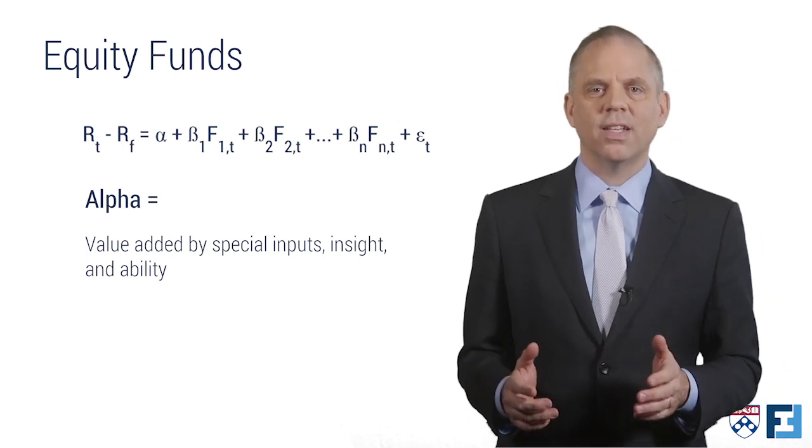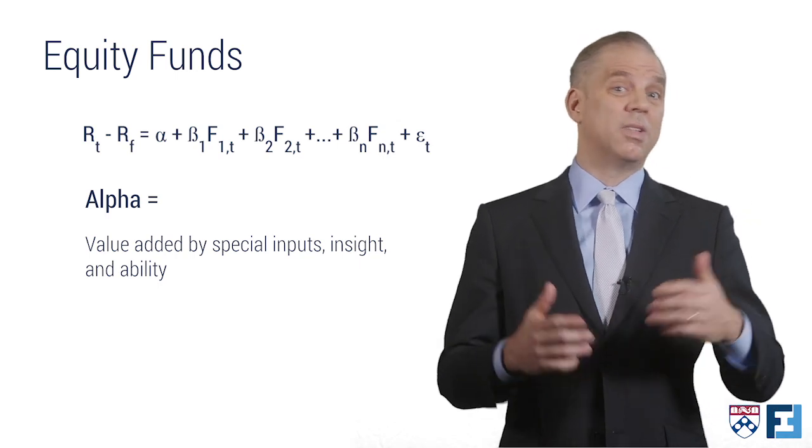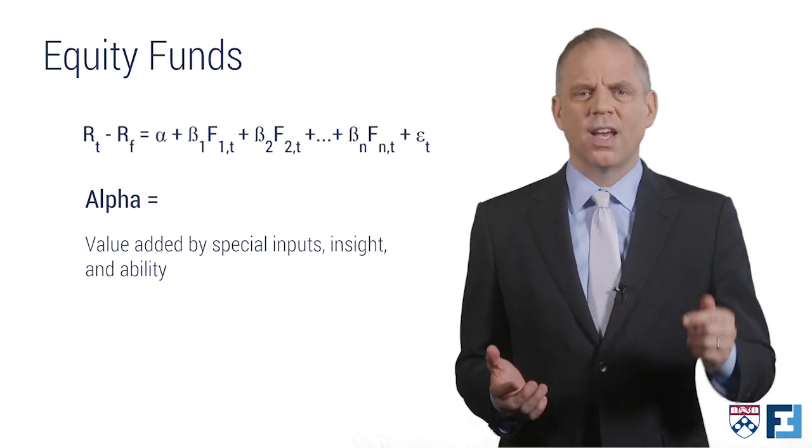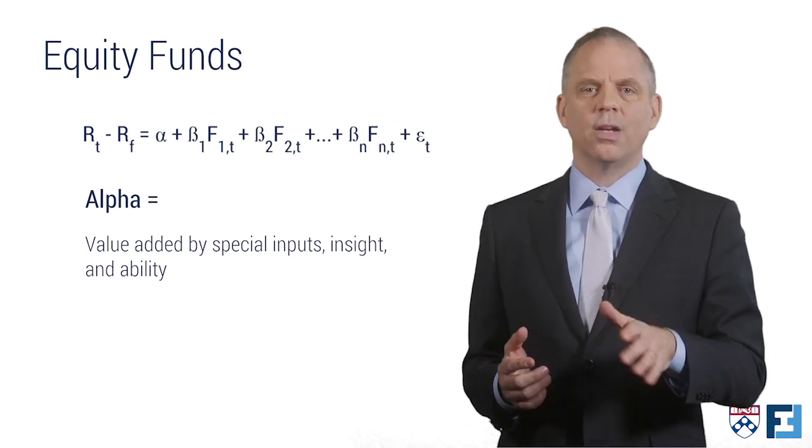If I claim to be delivering alpha to my clients, I'm saying that due to some special advantage, I deliver more expected return than my beta risk would imply.